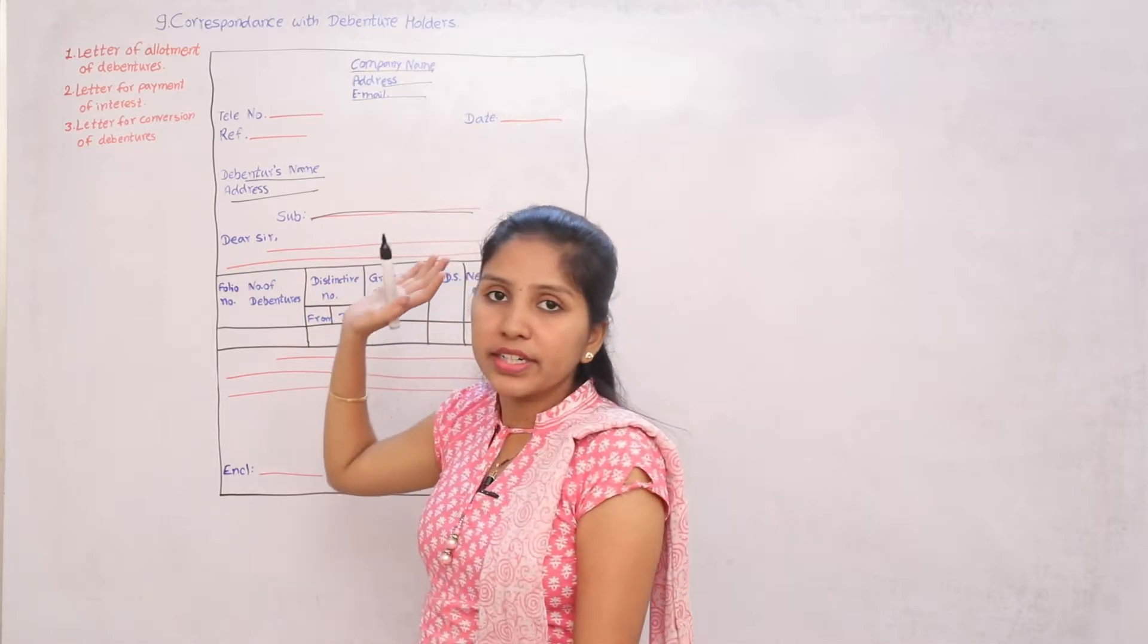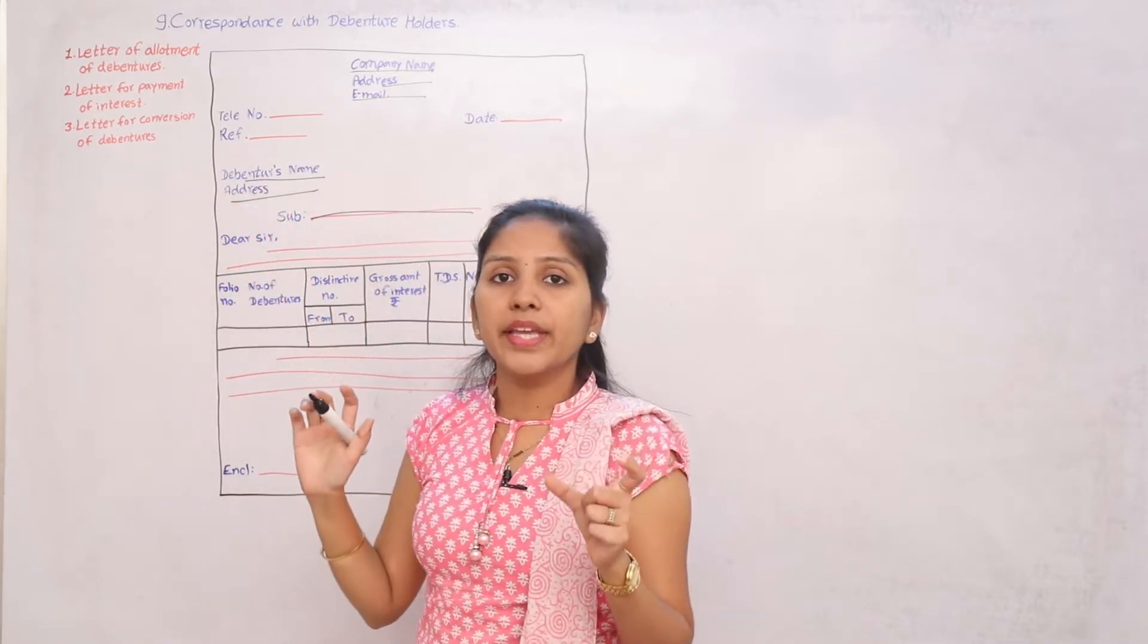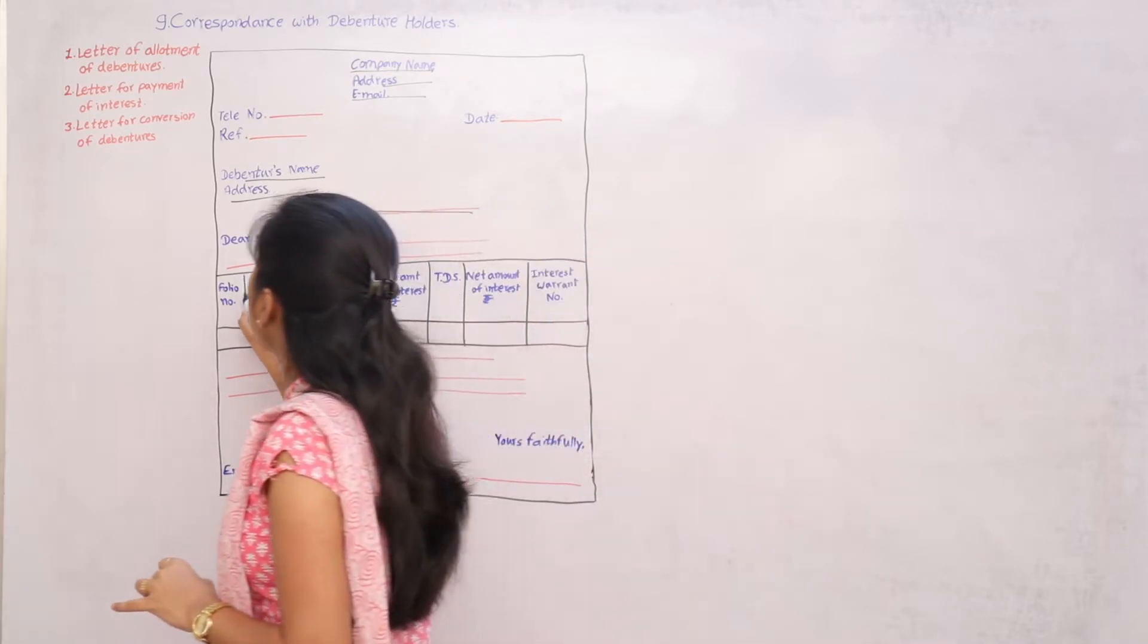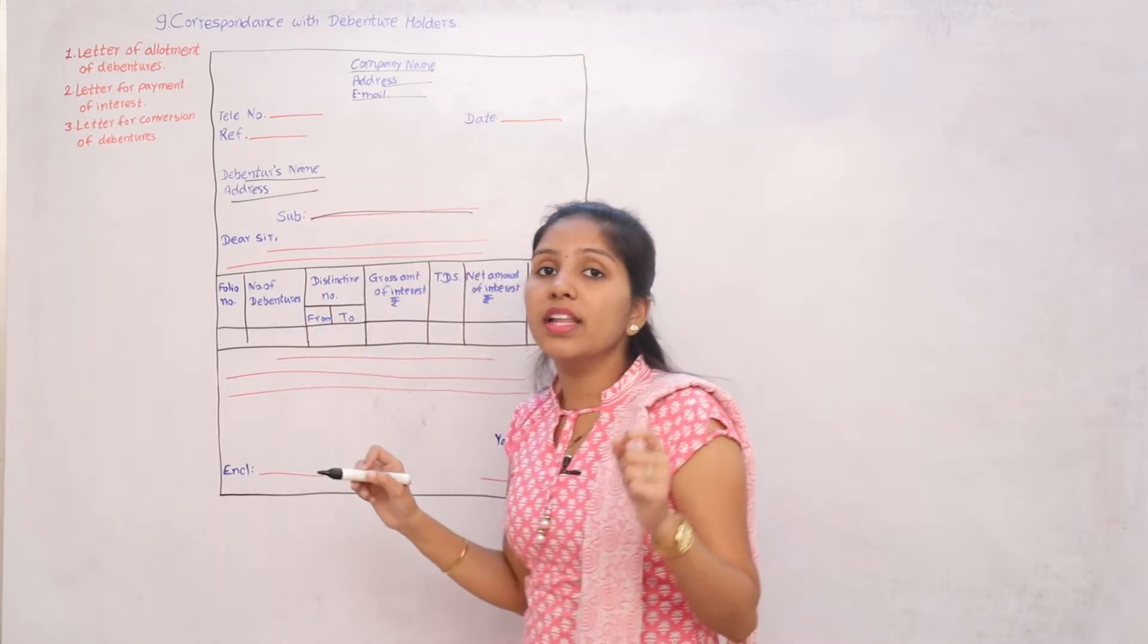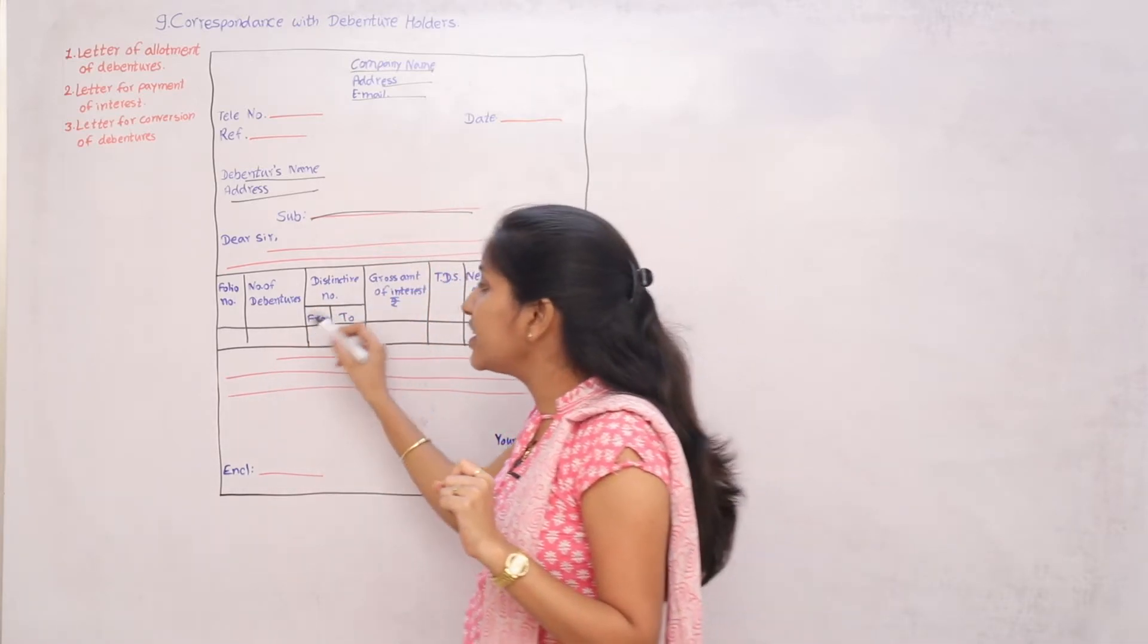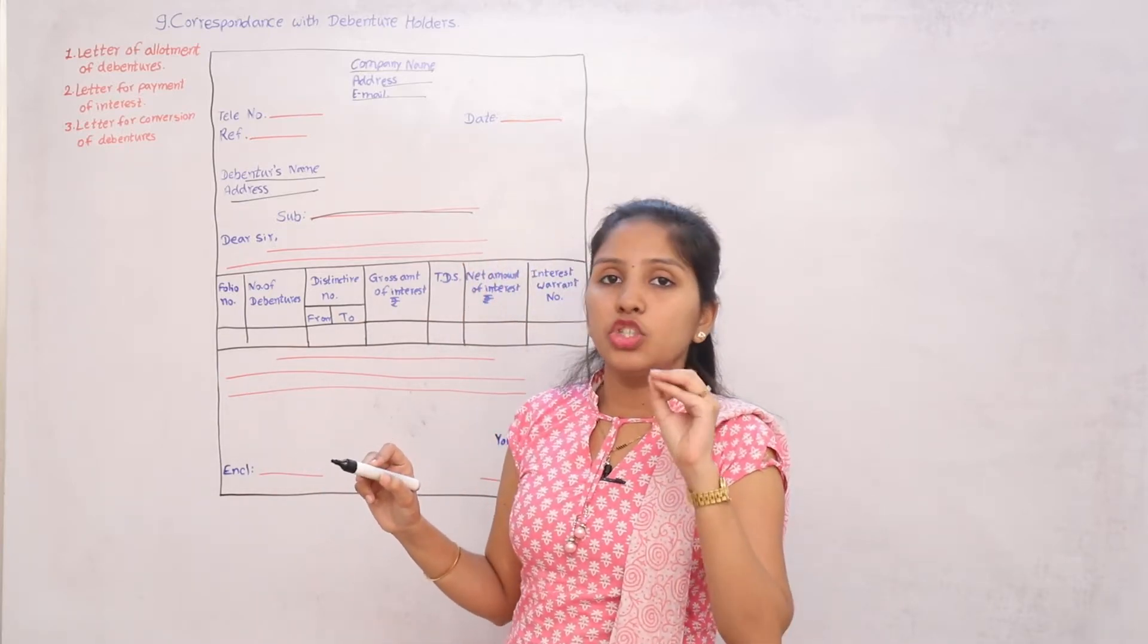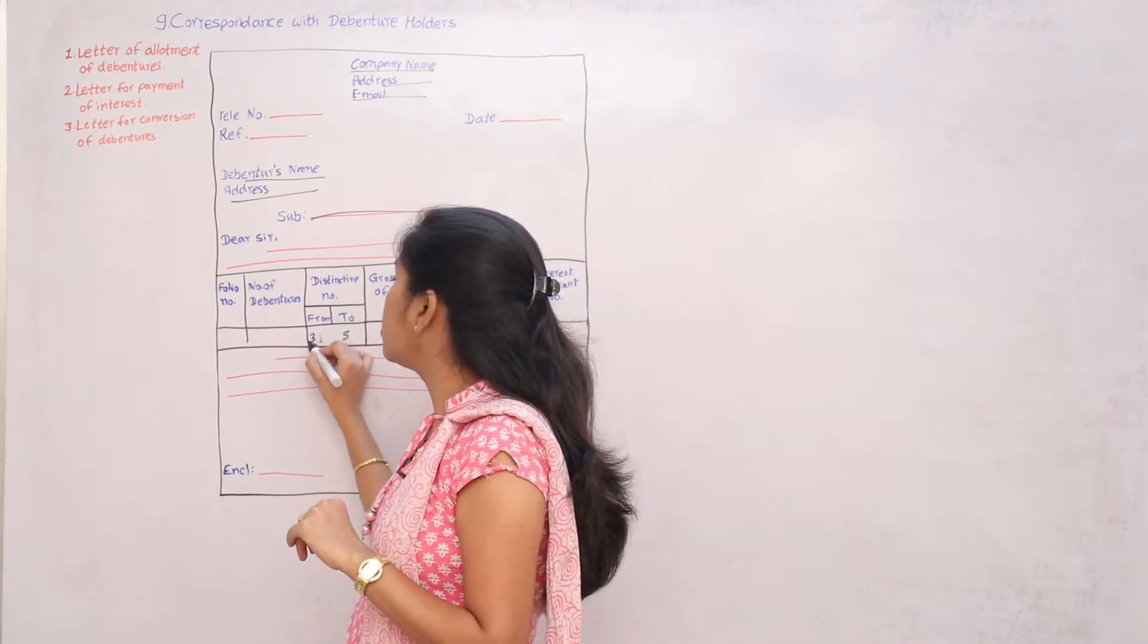And the subject. Then write 'Dear Sir,' and which exact topic this is regarding - two to three lines. Then your exact folio number, the number of debentures, whose distinctive number. The distinctive number means if there are five debentures, it will be from one to five, or from three-oh-one to three-oh-five.